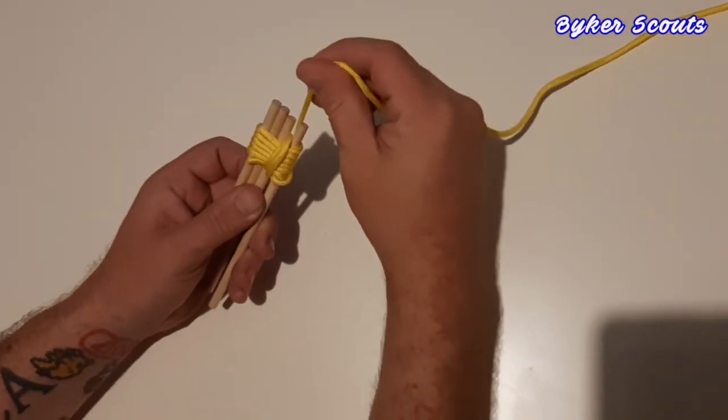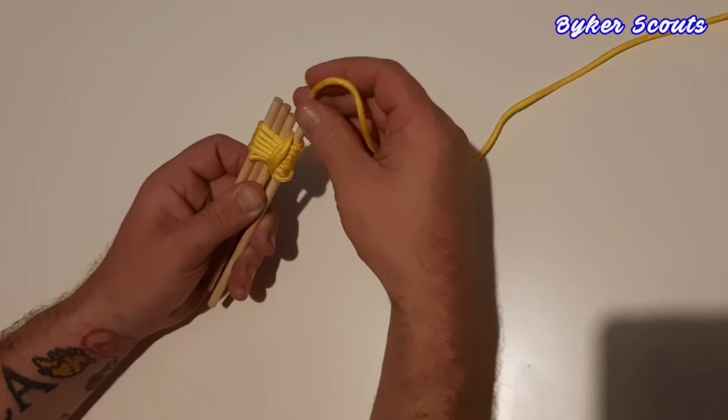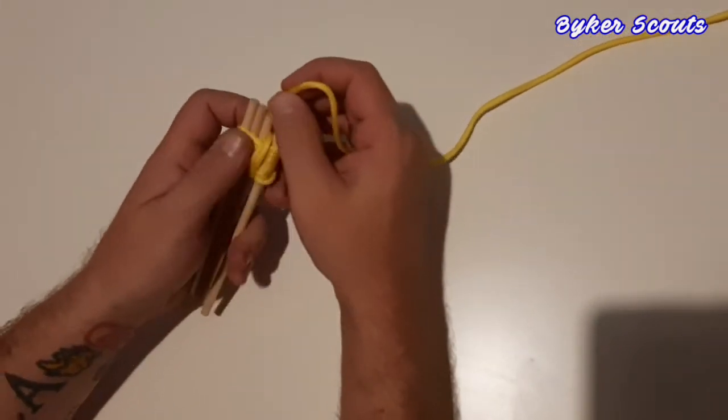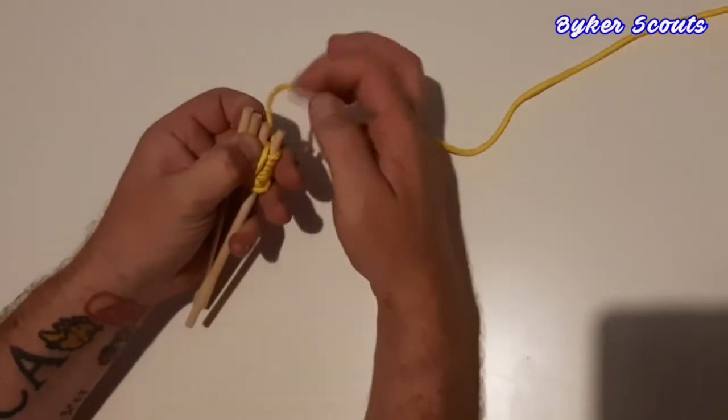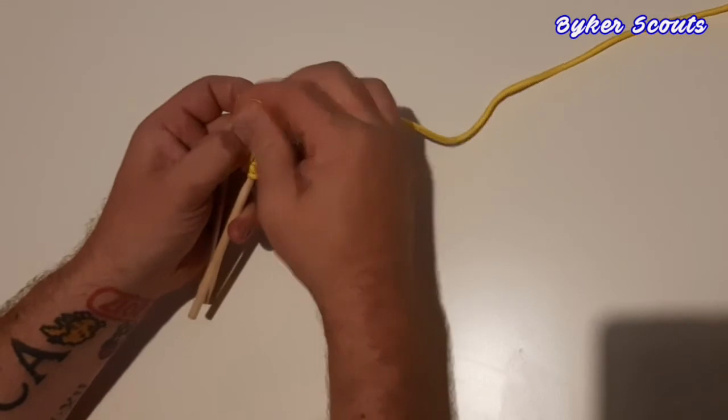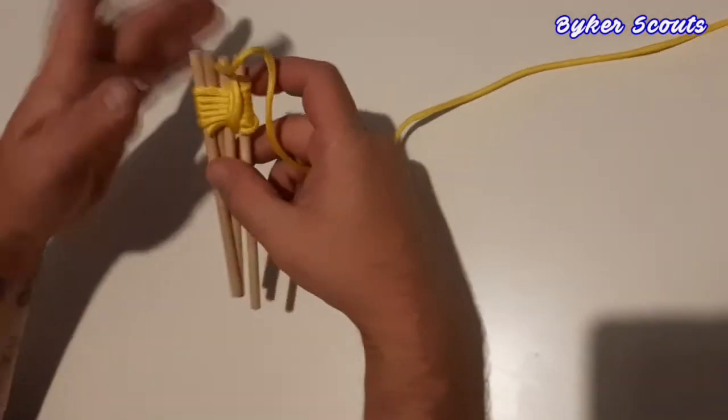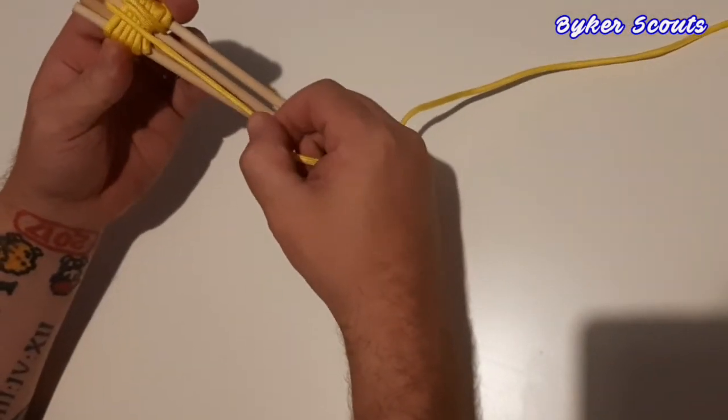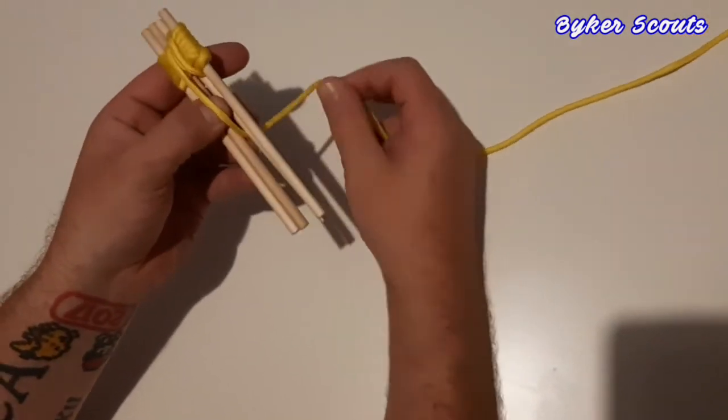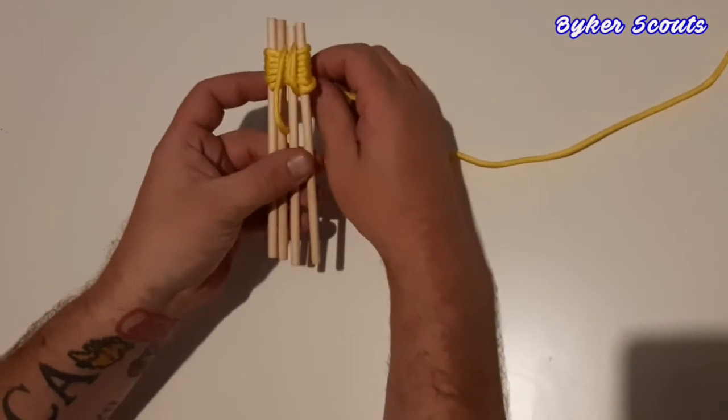What you need to do is bring your string or paracord around the back of the second dowel here. I'm just going to go around the back and between the second and third dowel, just going to do the same as we did before, and just take it down and back up between the second and third dowel. We'll do that twice.